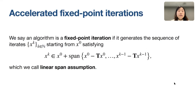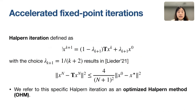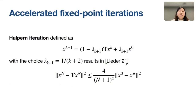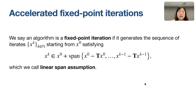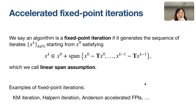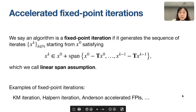We generalize what we mean by 'fixed point iteration.' An algorithm is a fixed point iteration if it generates a sequence starting from x0 where xk lies in the linear span of x0 and the fixed point residuals evaluated at x0 through xk-1. Both KM and Halpern iterations satisfy this linear span assumption, as do Anderson mixing and other schemes. This broad definition includes a wide range of fixed point iterations.